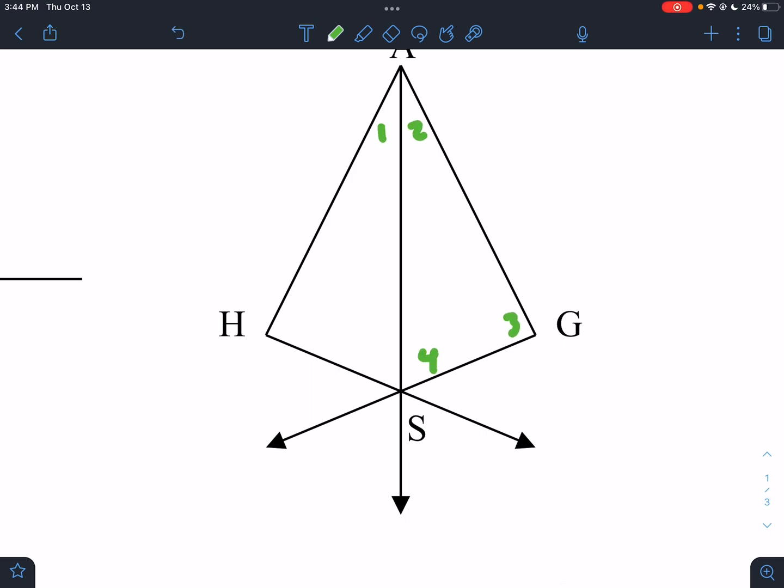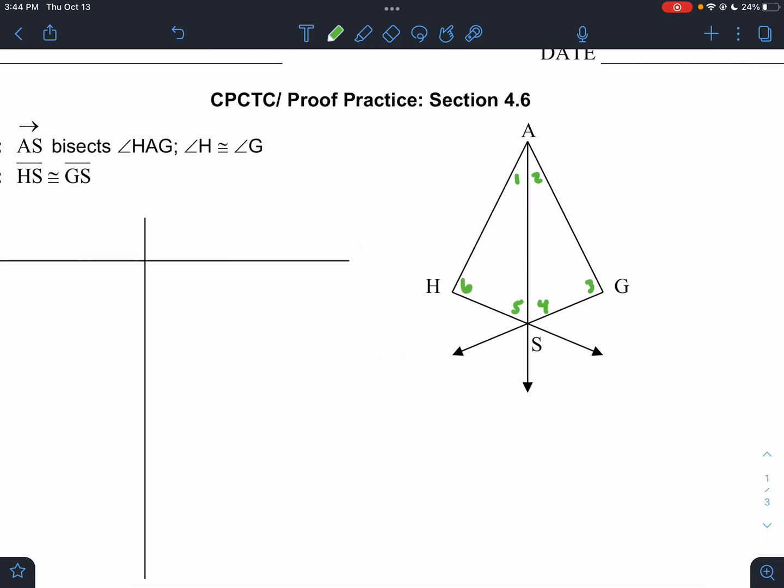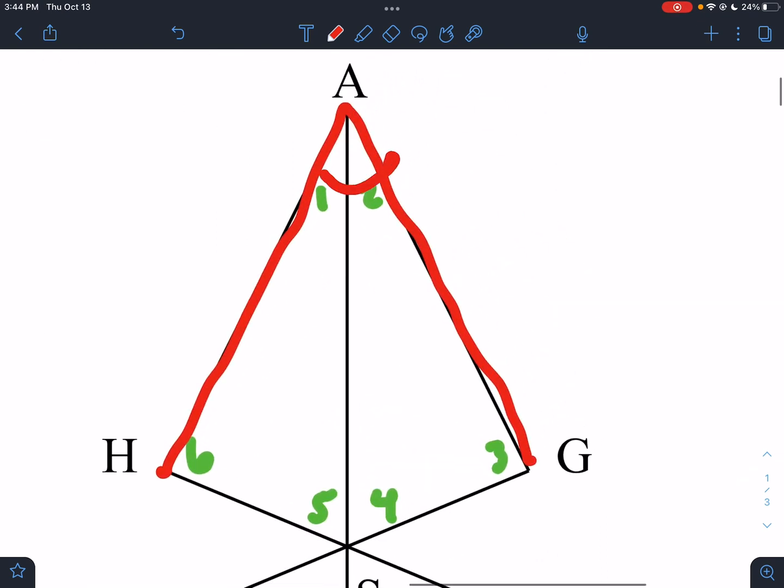One, two, three, four, five, six. It just helps me know which angle I'm talking about. And if AS bisects angle HAG, that means it cuts this vertex in half.